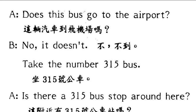这个开车的司机说：No, it doesn't. 这就是否定句，不，这辆公车不去。It doesn't go to the airport，后面几个字都省掉了。Take the number 315 bus，坐 315 号的公车去好了。